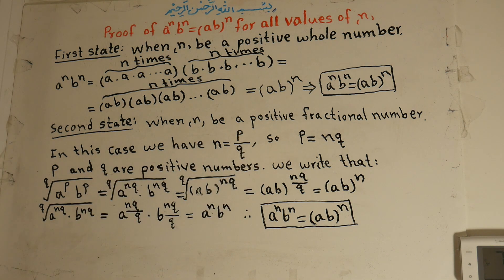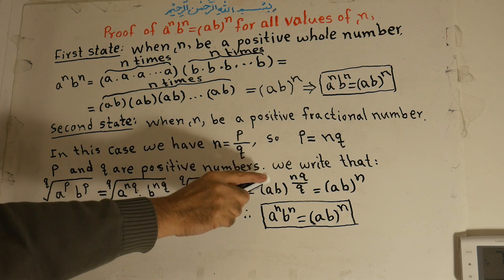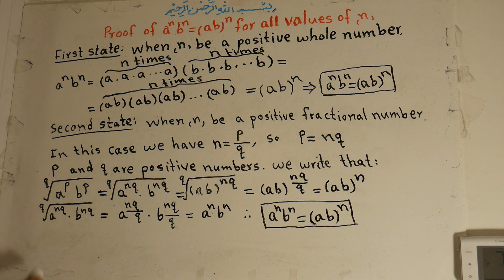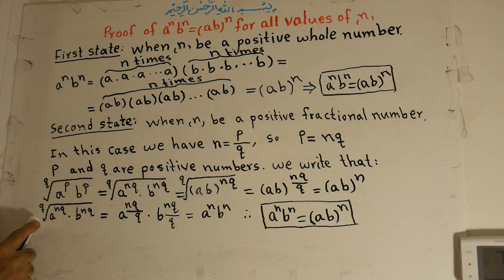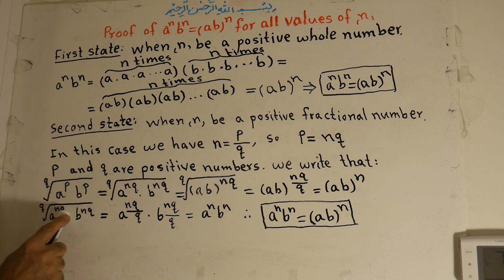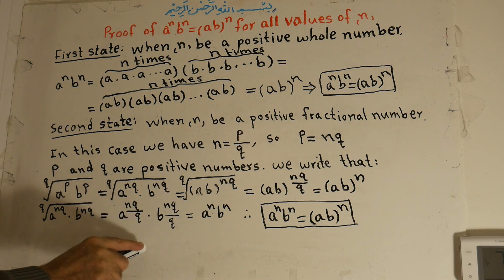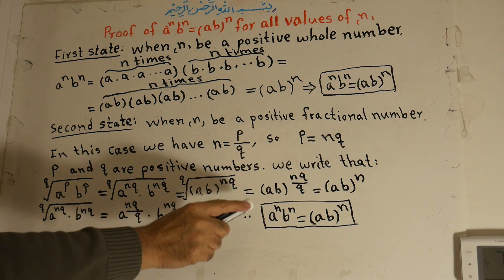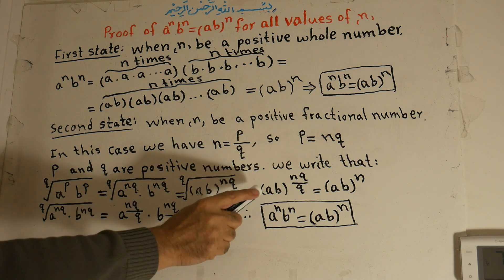We take the q from the root and bring it to the denominator, so q over q. That equals ab to the power of n. Also, the same thing: a to the power of nq times b to the power of nq, under the q-th root — we can write both numbers separately under the q-th root. A to the power of nq over q times b to the power of nq over q; q cancels with q in both, giving a to the power of n times b to the power of n. Therefore a to the power of n times b to the power of n is equal to ab to the power of n.